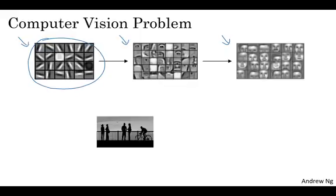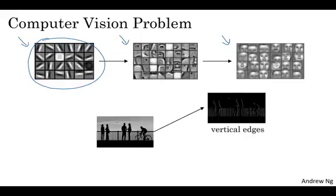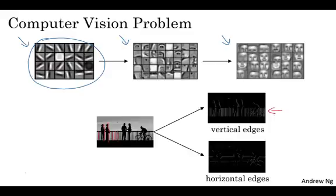Let's take an example. Given a picture like that, for a computer to figure out what are the objects in this picture, the first thing you might do is maybe detect vertical edges in this image. This image has all those vertical lines where the railings are, as well as vertical lines at the outline of these pedestrians, and so those get detected in this vertical edge detector output. You might also want to detect horizontal edges — for example, there's a very strong horizontal line where this railing is, and that also gets detected roughly here.